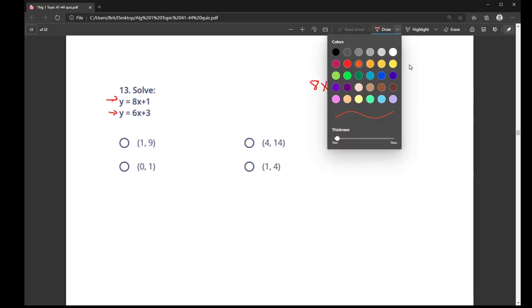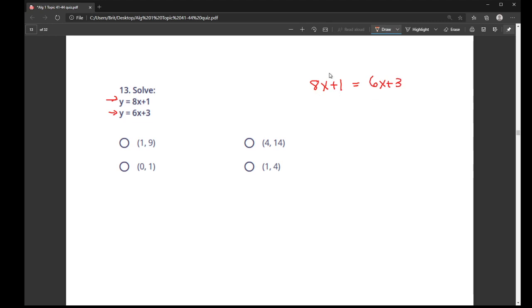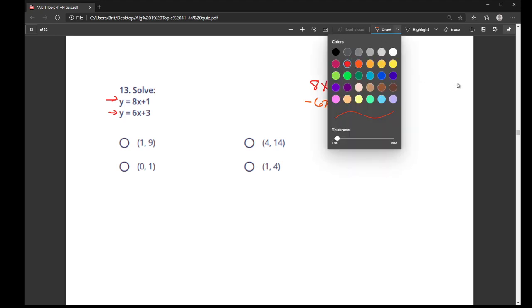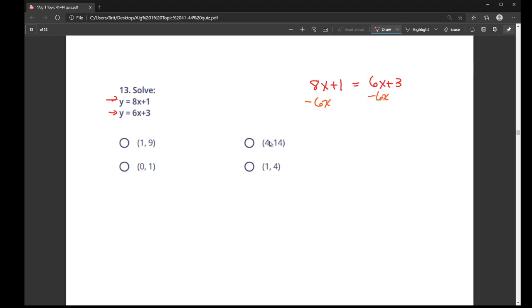So then my goal is to solve to get x by itself. So I want to get all of the x's to the same side of the equal sign. So I'm subtracting 6x from both sides. So I get 2x plus 1 is equal to 3.